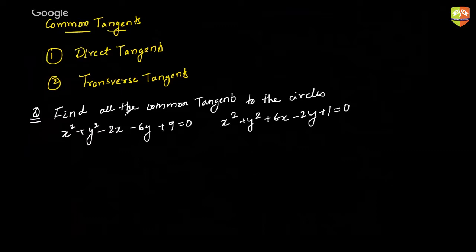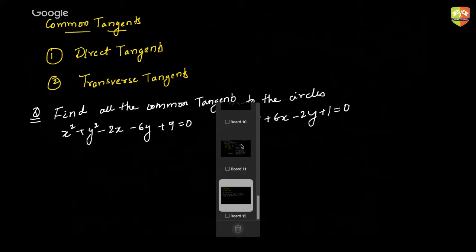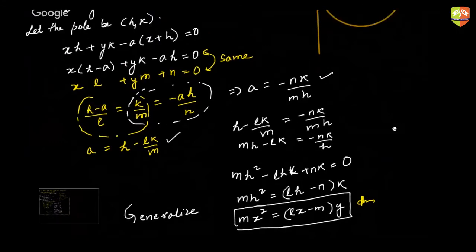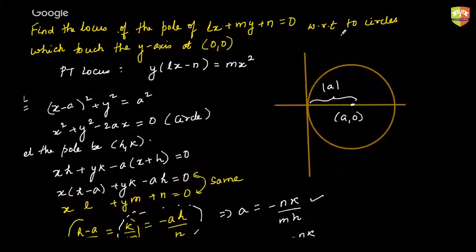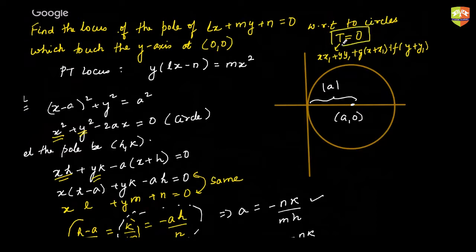If you feel unsure about how to get the equation of the polar, it's the same concept: T = 0 is the equation of the polar. T = 0 means xx₁ + yy₁ + g(x + x₁) + f(y + y₁) + c = 0. Wherever there was x² I replaced it with xx₁, y² with yy₁, and x with (x + x₁)/2. Remember this T = 0 formula — it works for whatever circle you have.